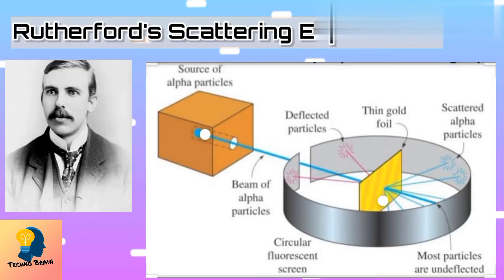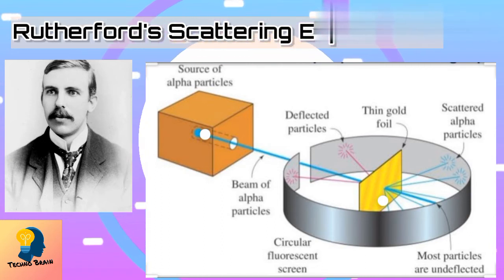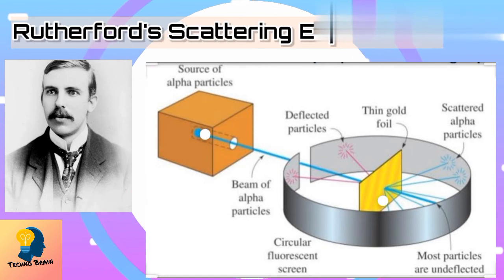Rutherford's scattering experiment: Rutherford put forth the nuclear model of the atom in the year 1911. Rutherford took a thin gold foil with the thickness of 10^-4 mm and bombarded alpha particles on it.